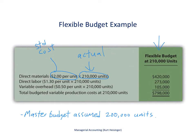You'll see this for direct materials, direct labor, and variable overhead — the production area of our company. We simply take the standard cost per unit times the actual number of units produced, and that gives us our flexible budget. You'll see that here with these three items and with the total.